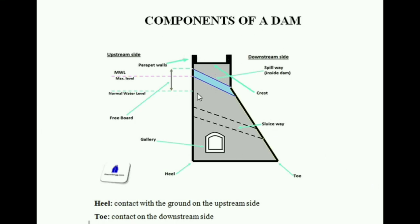This picture represents a dam. This is the upstream side of the dam which forms a reservoir to store water. This is the downstream side of the dam. This part is called the heel of the dam, which forms a junction between the upstream face of the dam and the base concrete structure. This is called the toe of the dam, which forms a junction between the downstream side and the base concrete structure. This area is called the crest of the dam, which is the topmost plane of the dam. The crest is used as a roadway for inspection. These are called parapet walls, which form a border for the crest.